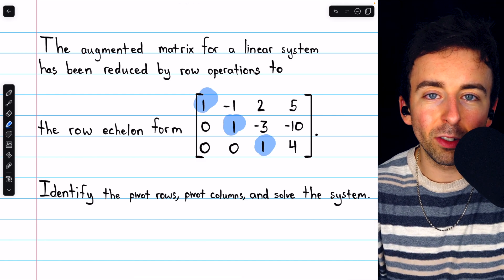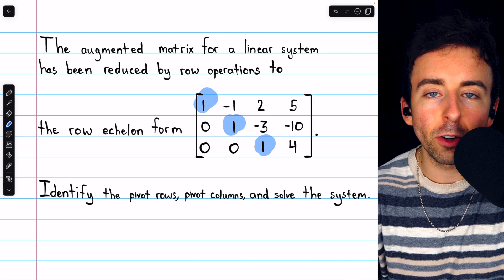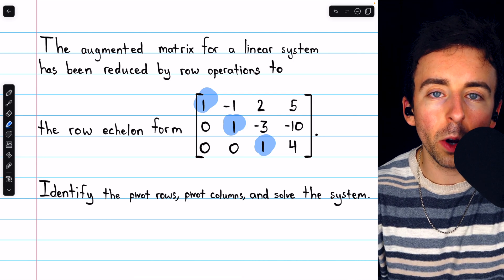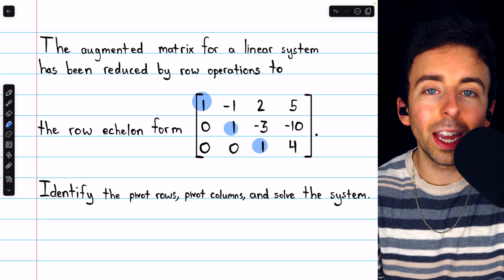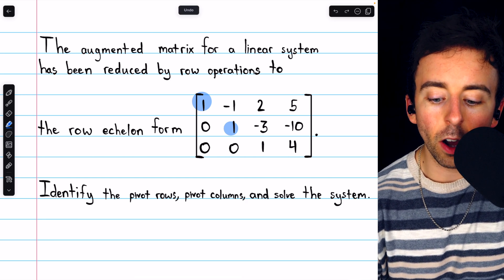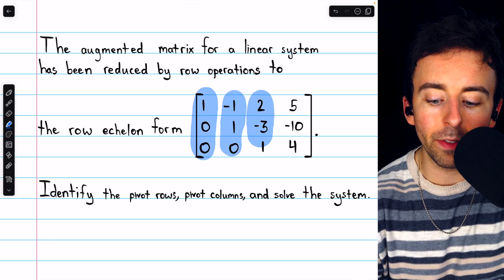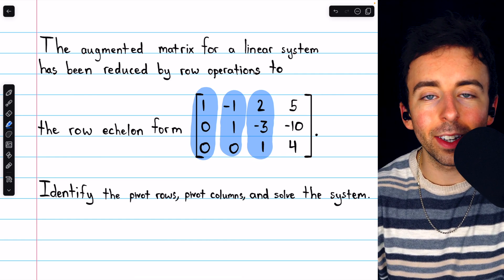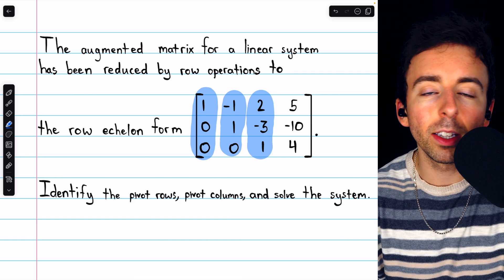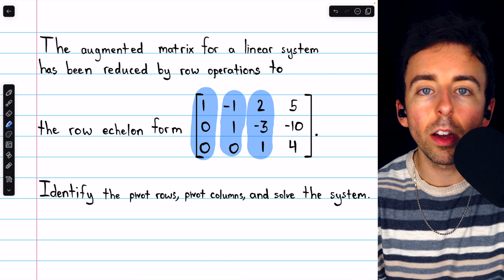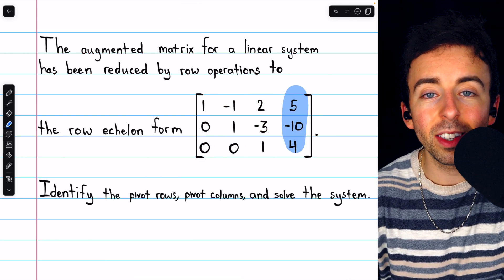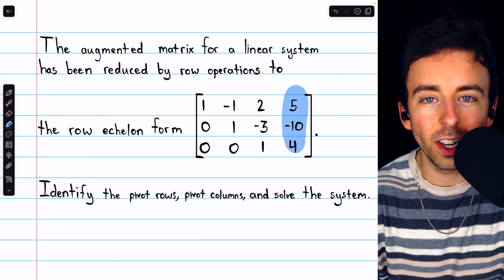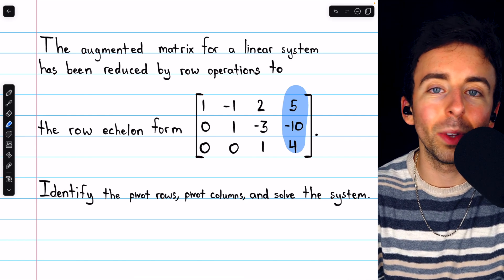Remember a leading 1 is just a non-zero entry which occurs first in the row that is positive 1. Each leading 1 occurs in what's called a pivot position and the columns containing those pivot positions are the pivot columns, hence columns 1, 2, and 3 are pivot columns. Column 4 is not a pivot column since it doesn't contain a pivot position.